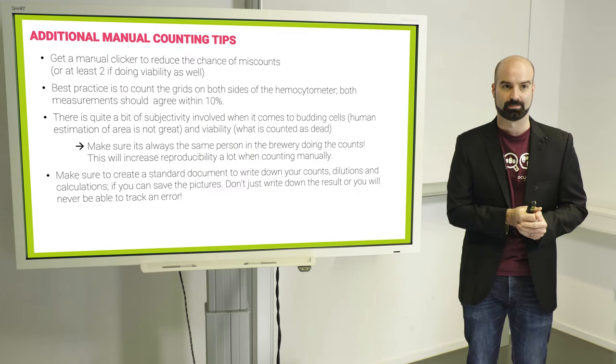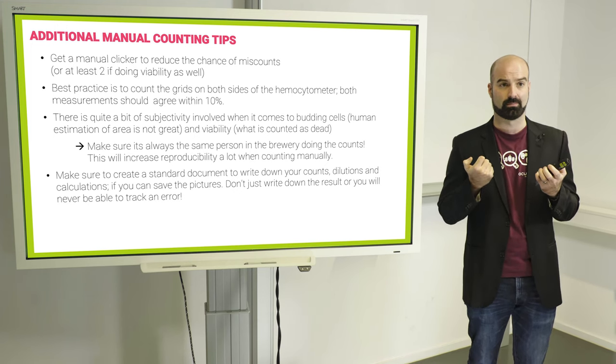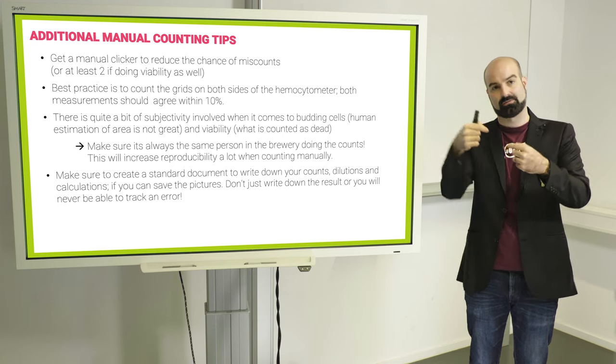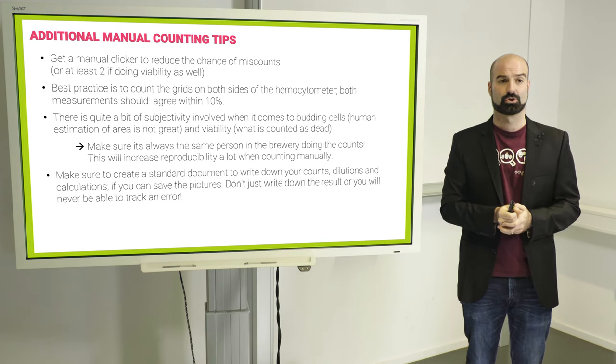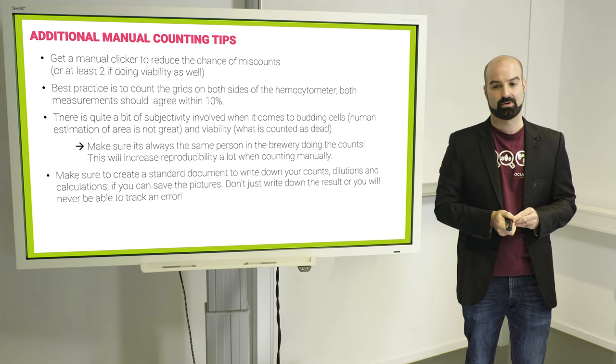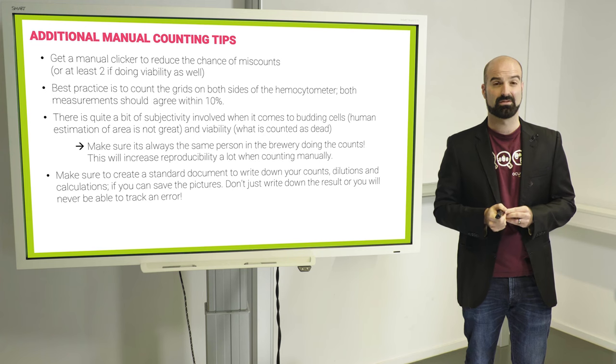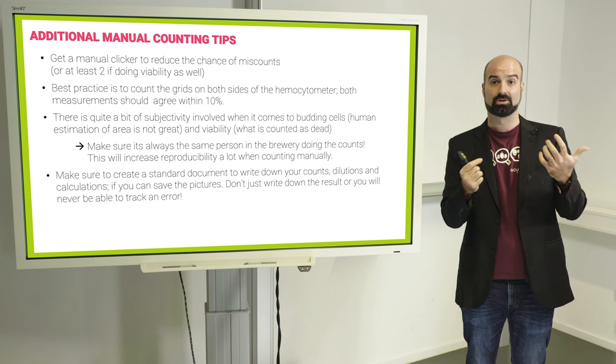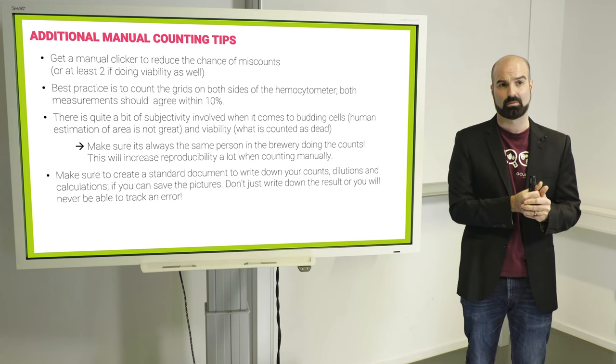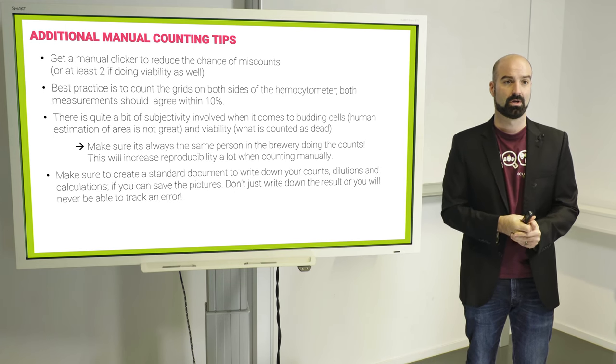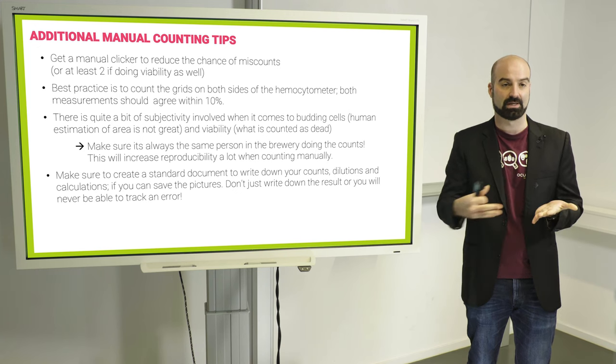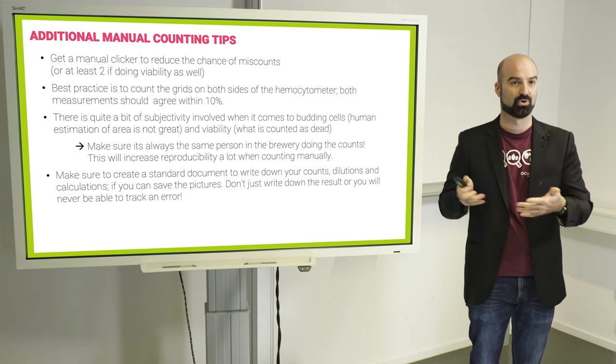And some additional final general tips. Get a clicker if you're counting manually, even better get at least two clickers if you're doing viability as well to not get mixed up. If you're using a hemocytometer, count both sides. So there's two sides of the chamber. Do one side first and fill the other and count that one as well. And the results should be fairly similar to make sure you didn't make a mistake. And very important, have the same person do the count every time. I know this is not easy in practice every time, but there's quite a bit of subjectivity, especially when it comes to budding cells and viability. Is it blue? Is it not blue? Is it 50% of the area or is it larger? Humans are not great at estimating the area of circles. So if one person does it all the time, he might make mistakes, but he'll probably tend to make mistakes in the same spots. So at least it's consistent. And finally create a standard document where you just fill in the data that will alleviate the pressure of filling in the steps you did for the dilution. If everything is pre-written and you only put down the numbers, print a stack of them and keep in the lab.